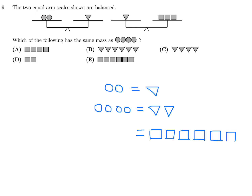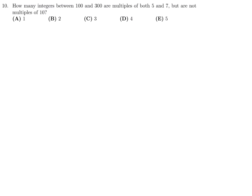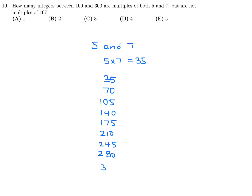How many integers between 100 and 300 are multiples of both 5 and 7 but not of 10? A multiple of both 5 and 7 must be a multiple of 35. The multiples of 35 between 100 and 300 are: 105, 140, 175, 210, 245, 280. Any multiple of 10 ends in zero, so we remove 140, 210, and 280. That leaves three numbers: 105, 175, and 245. Number 10, the answer is C.